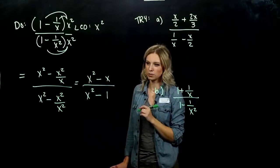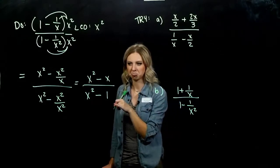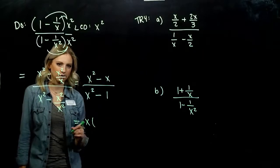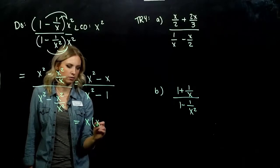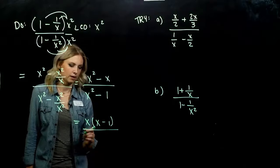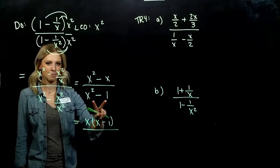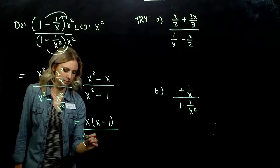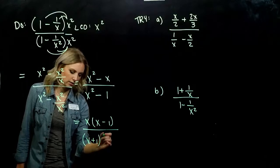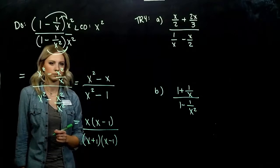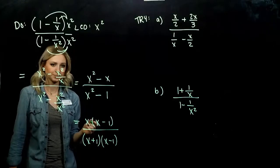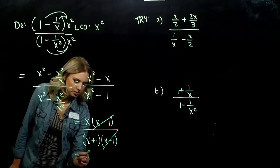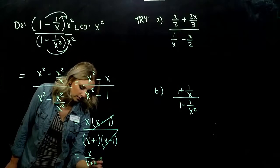Up top I have x squared minus x, which simplifies further. We want to simplify as far as we can go. Can we factor? The common factor on top is x, leaving us with x times (x minus 1). Down below, we have a difference of squares: x squared minus 1 factors as (x plus 1)(x minus 1). Now we can cancel one factor of (x minus 1) top and bottom. We're left with x over (x plus 1).